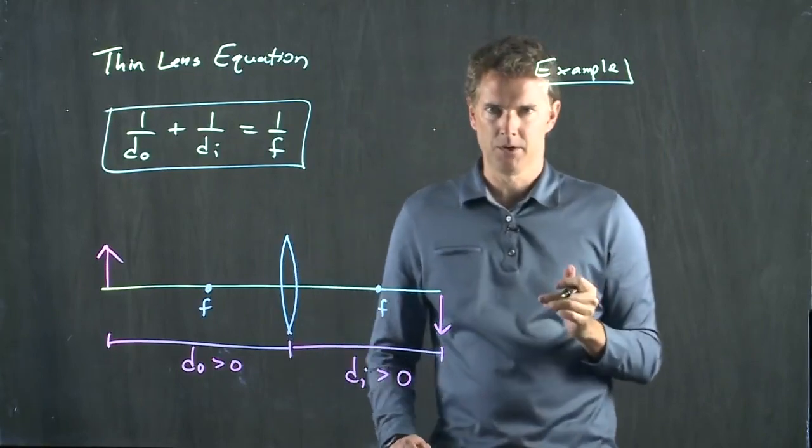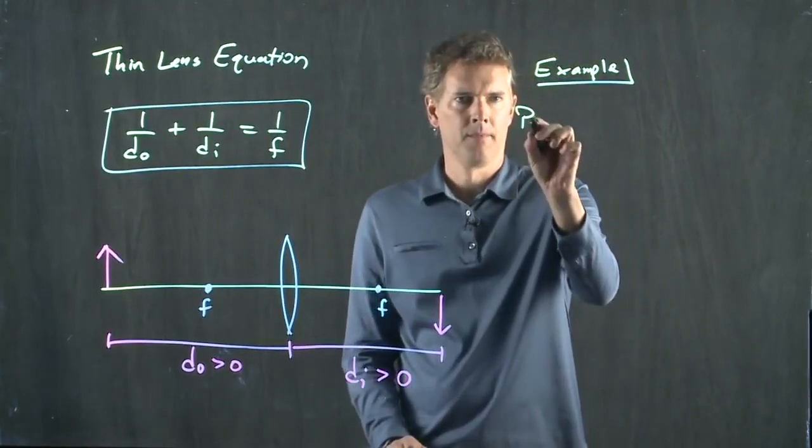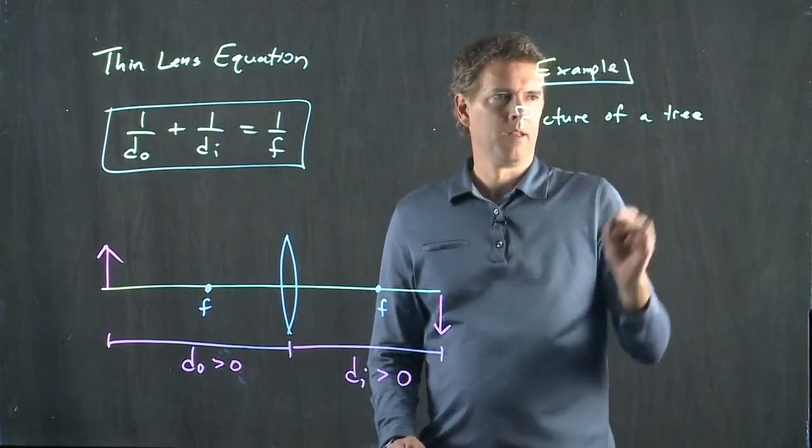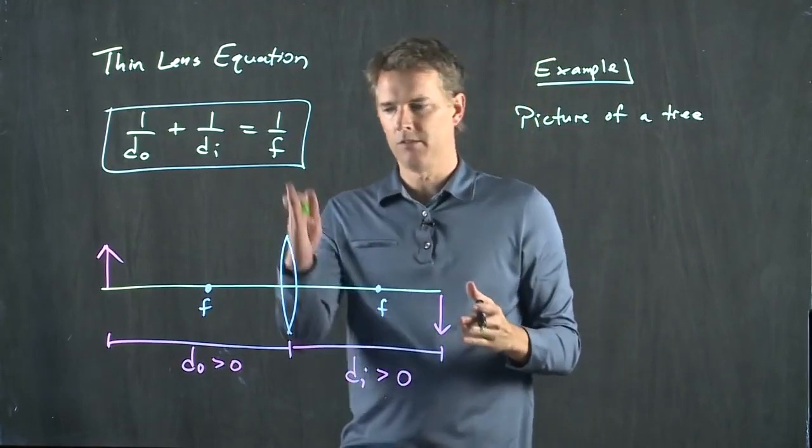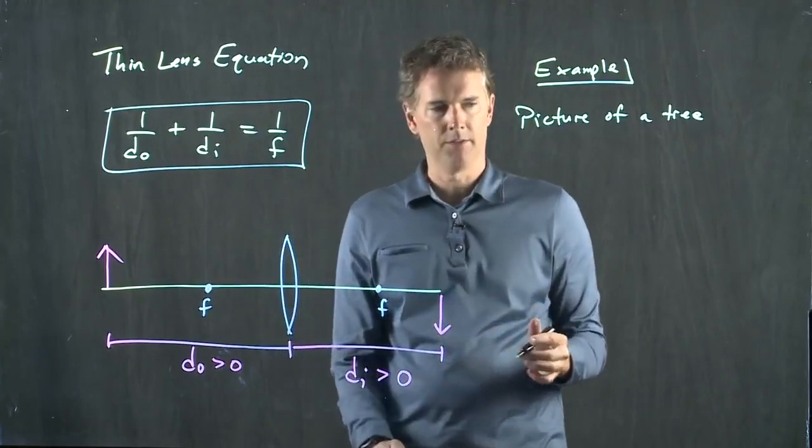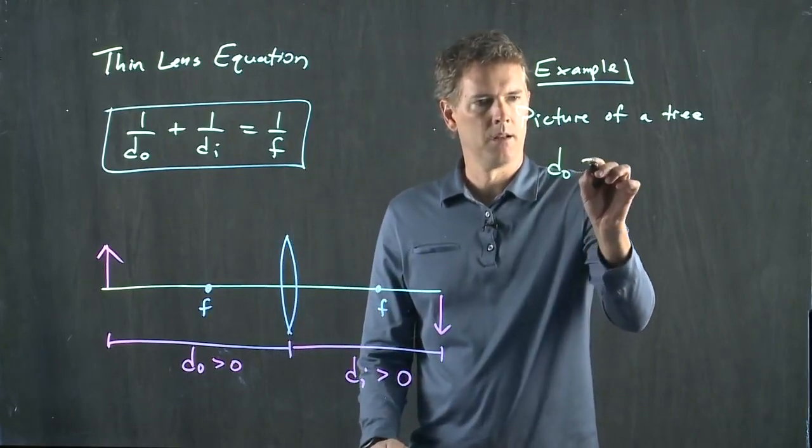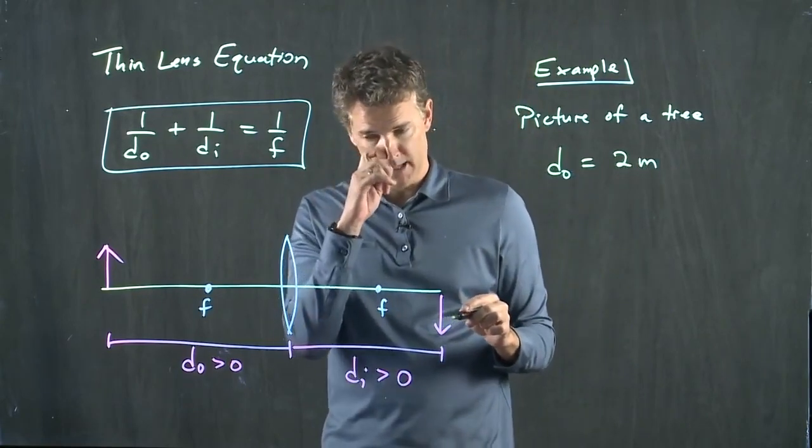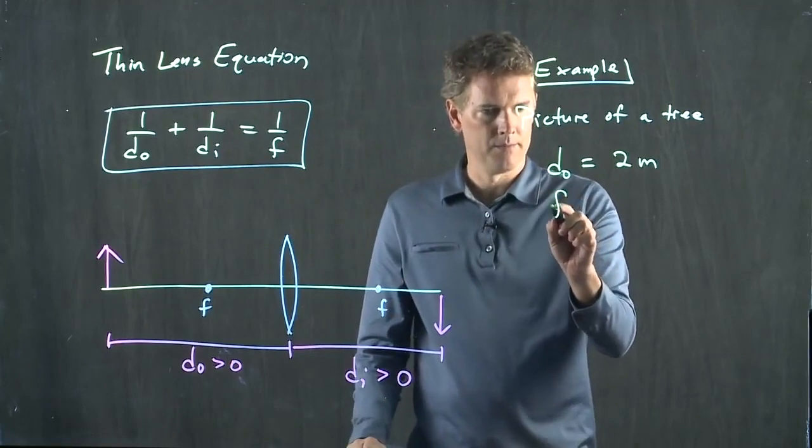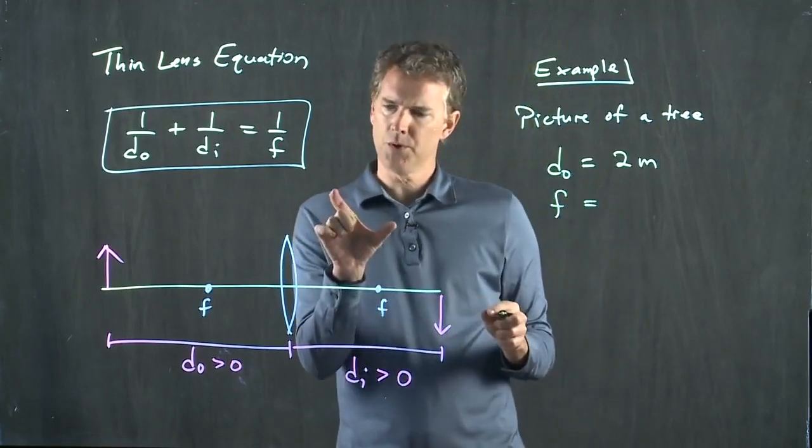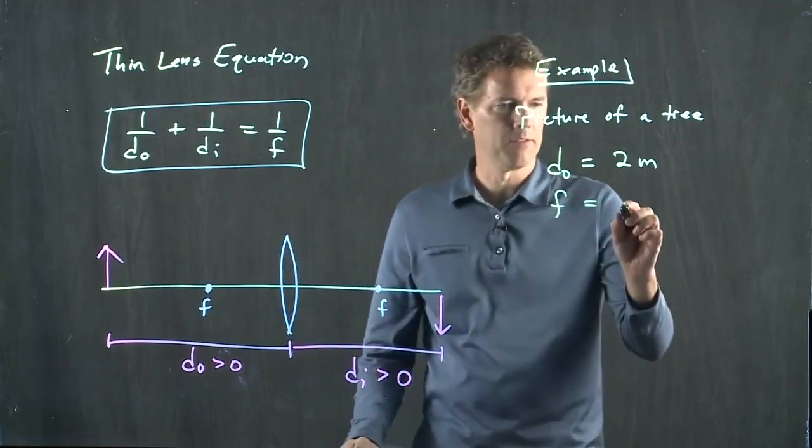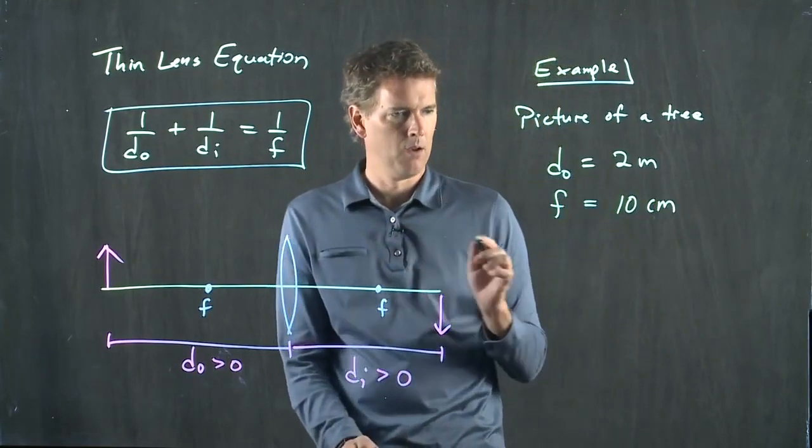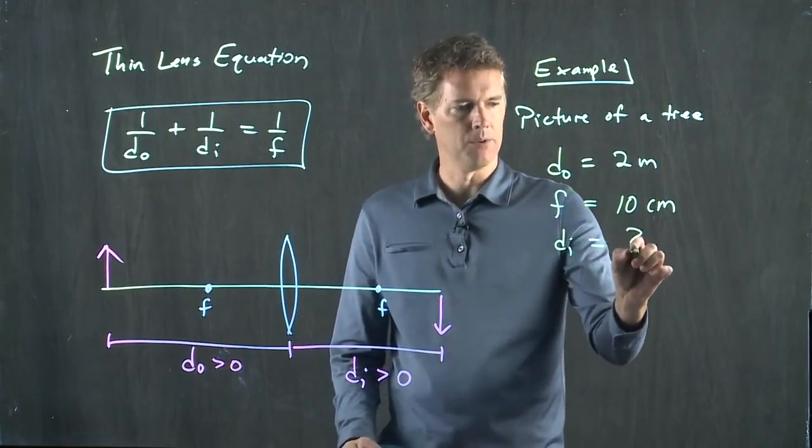Let's say you want to take a picture of a tree. And we're going to say that the distance from your camera lens to the tree is 2 meters. And let's say that the focal length of your camera is pretty short, maybe 10 centimeters. What is DI equal to?